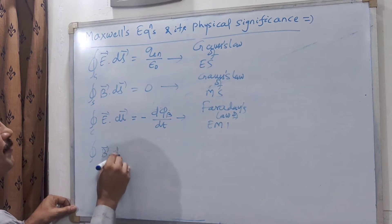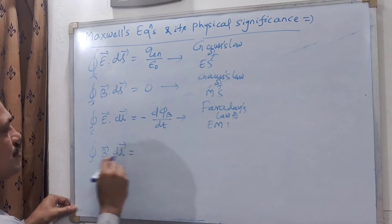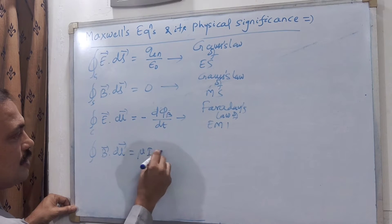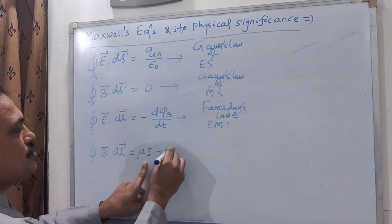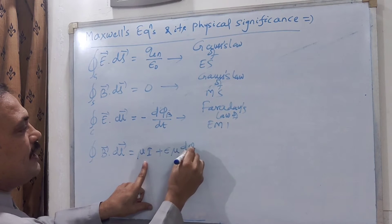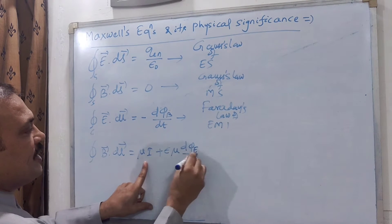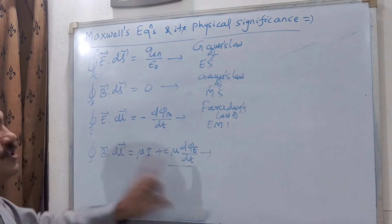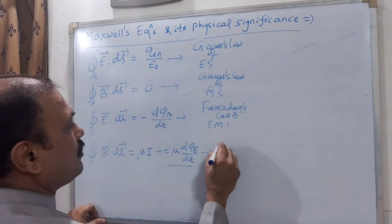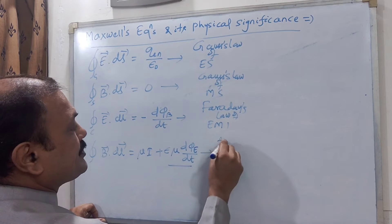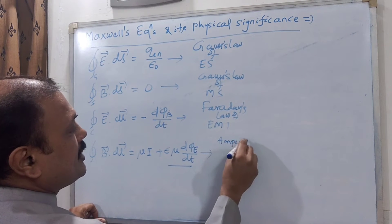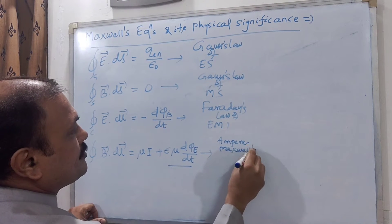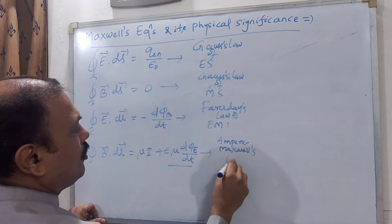The fourth equation is ∮B·dl, which is the original Maxwell equation. It equals μ times the conduction current plus μϵ dΦ_E/dt, where the second term arises due to the displacement current. This is known as the Ampere-Maxwell equation.